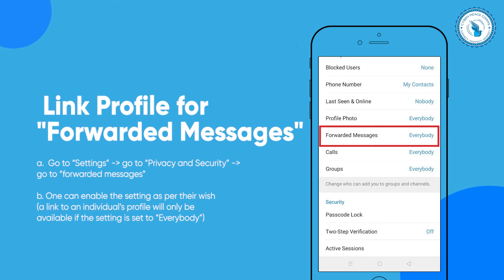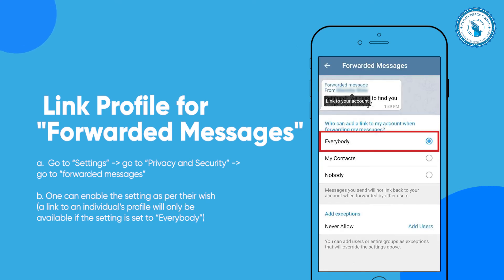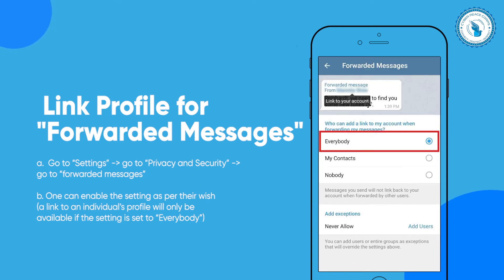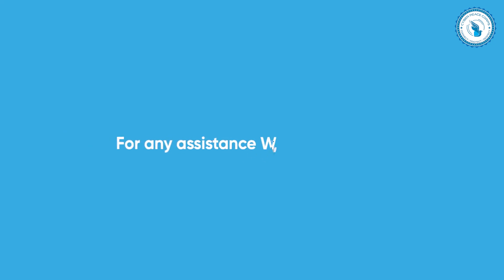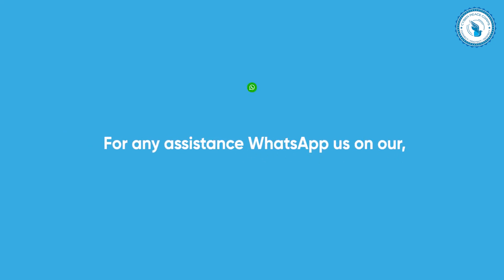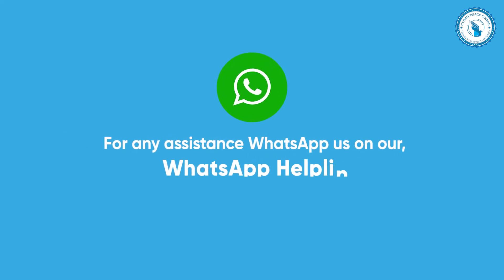To manage your profile link for forwarded messages, go to Settings, then Privacy and Security, then Forwarded Messages. You can enable the setting as per your wish. A link to an individual's profile will only be available if the setting is set to Everybody.